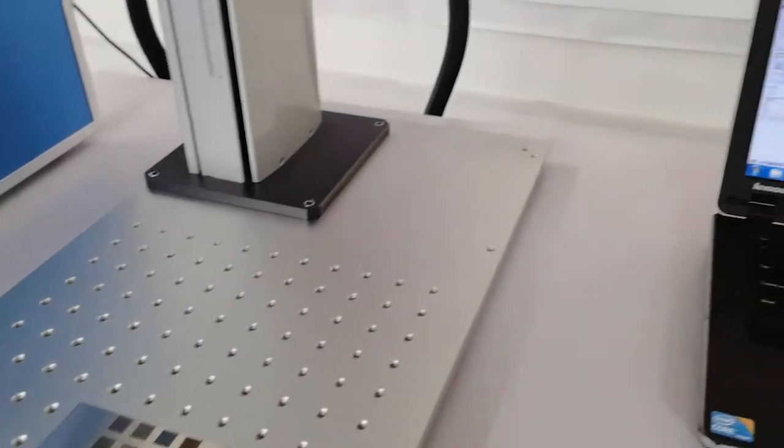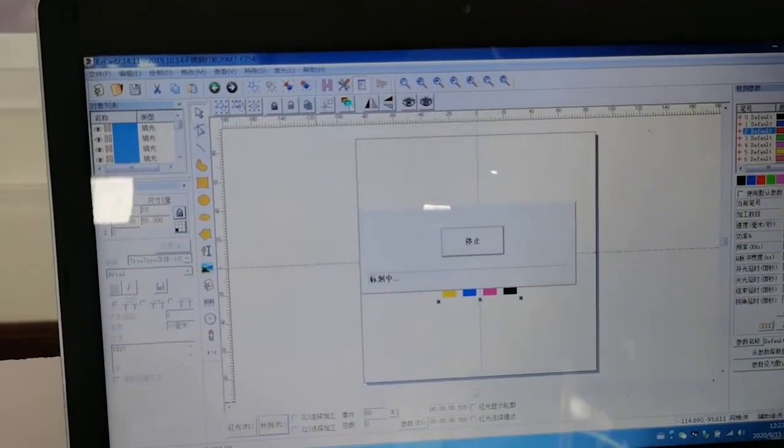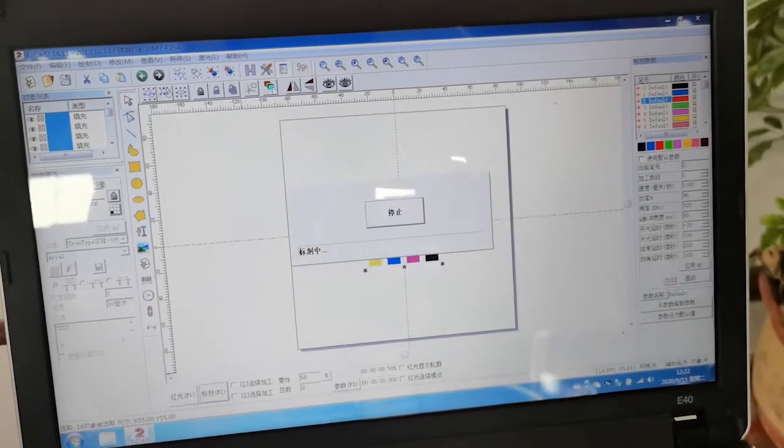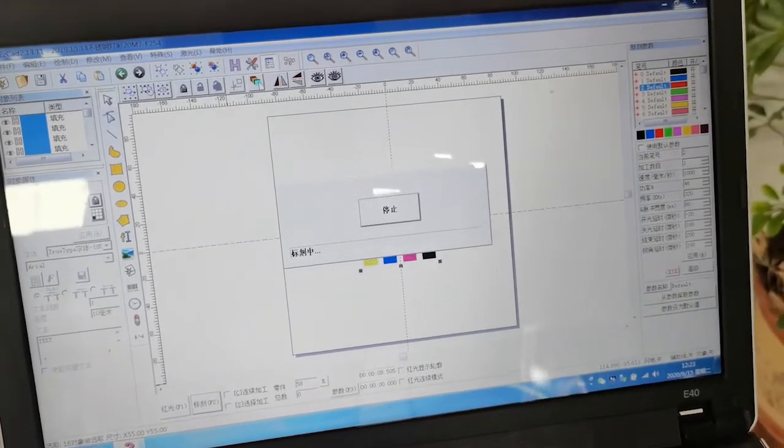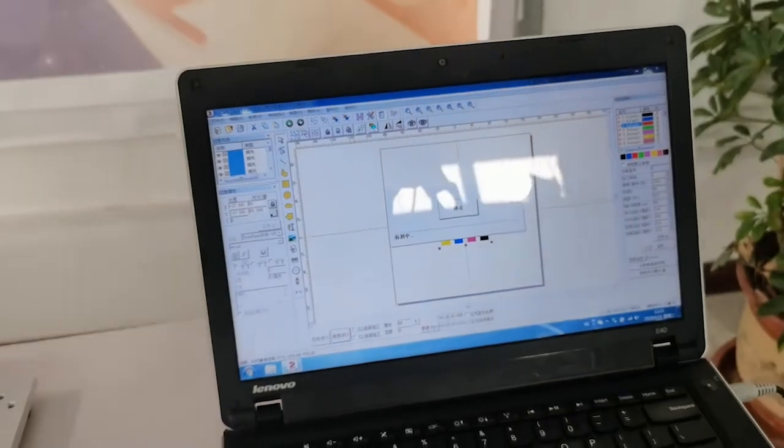We use the software as the Beijing GCZ EZ card. The software parameter is set up already by our technician manager. And then for marking all the color, you can see clearly it's very easy to operate.